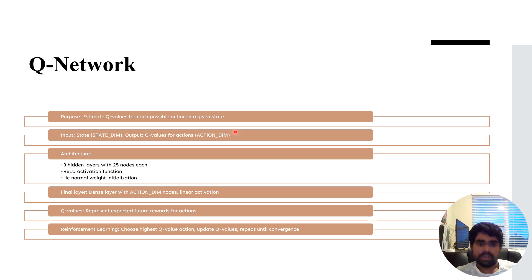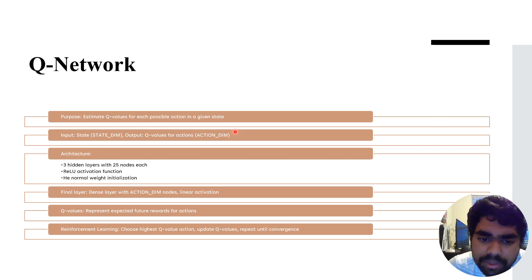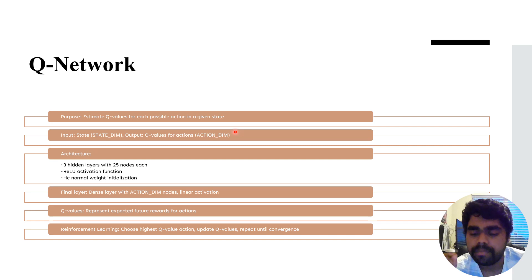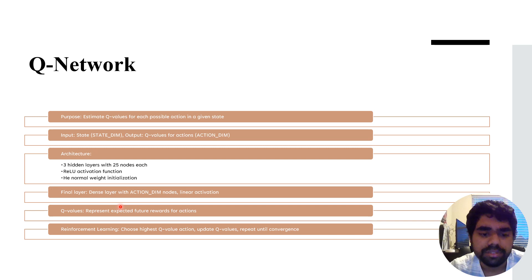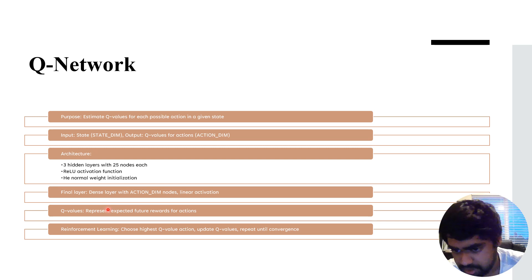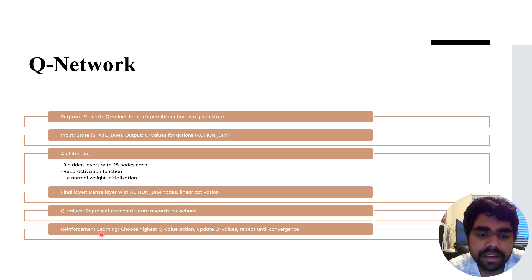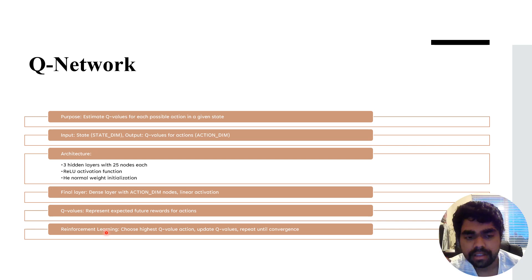The purpose of the Q-network is to estimate Q-values for each possible action in a given state. The input to the Q-network is a state, and the output is the Q-values — indicating which action has the highest probability of leading to the end goal. The architecture uses three hidden layers with 25 nodes each, a ReLU activation function, and normal weight initialization. The final layer is a dense layer with the action dimension and linear activations.